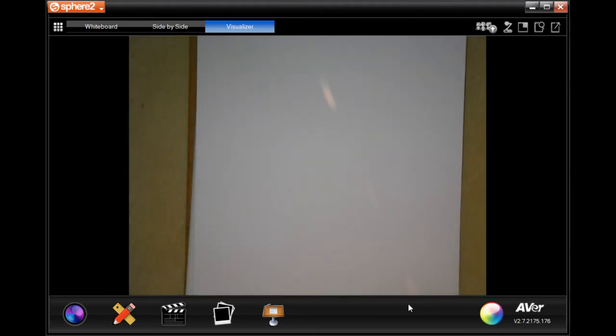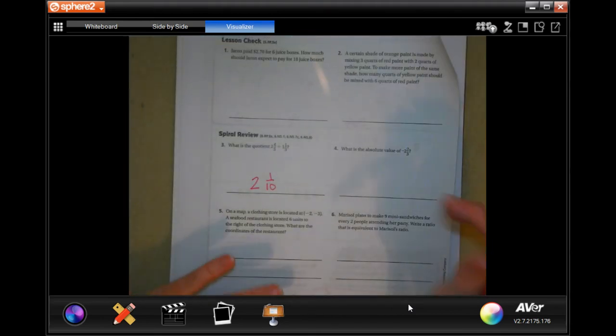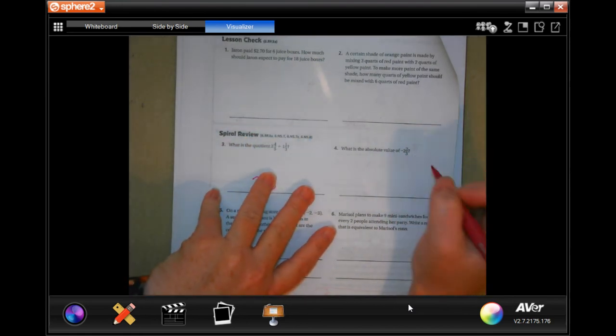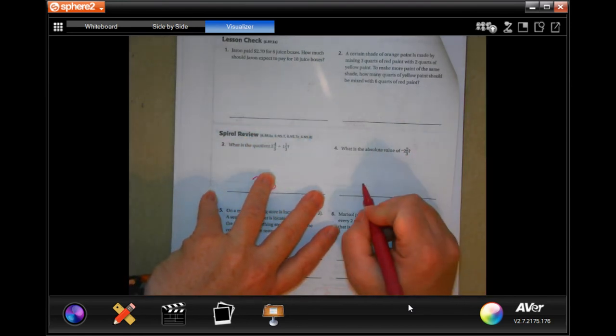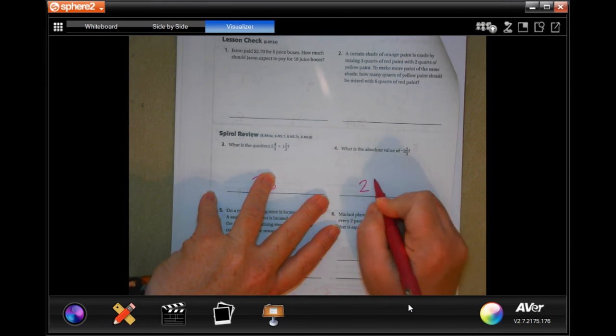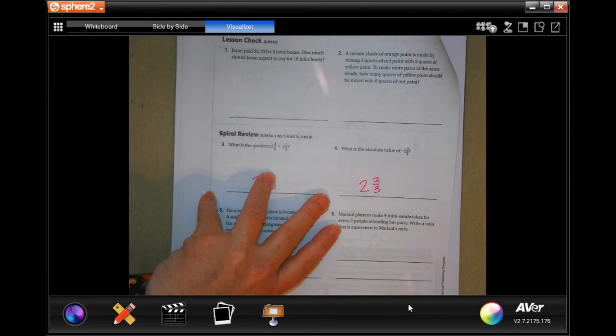All right. I'm going to go ahead and get started. We have number 4. What is the absolute value of negative 2 and 2 thirds? Well, the absolute value just means how far away from 0 is it? Doesn't care if it's negative or positive. It's still the same amount away from 0. So the absolute value is just 2 and 2 thirds.